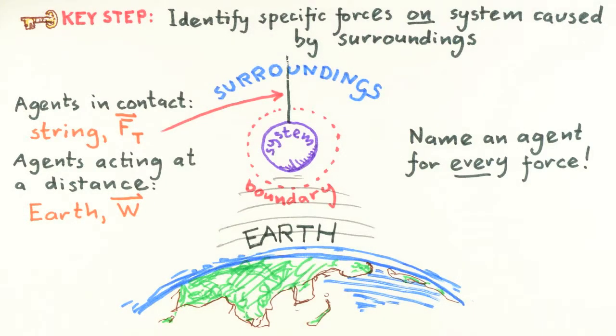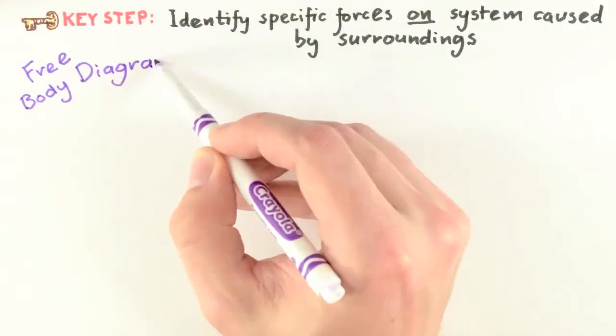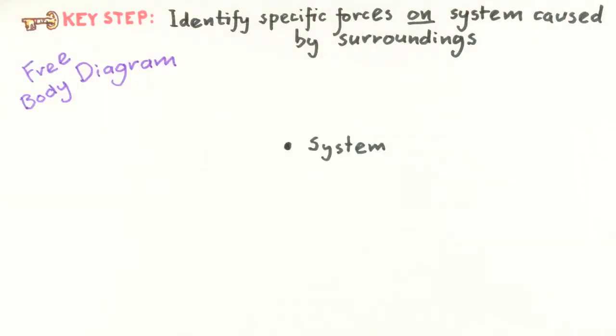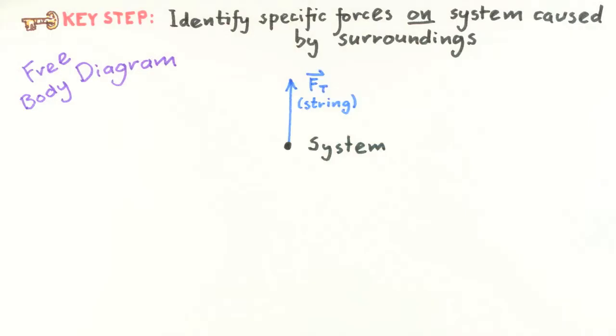We can represent all these interactions of the system with the surroundings in a compact sketch we will call a free body diagram. In this diagram, we start with a dot to represent our system, then add in an arrow to represent each interaction. So we can include the only contact interaction, the tension force, which acts along the string away from the object, upward in this case. It's good practice to list the agent responsible for this interaction, if there is space available. Next, we can draw an arrow to represent the only distance interaction, the weight, which acts downward. At this point, we can also specify a coordinate system, which we'll choose with the y-axis oriented vertically with positive y pointed upward.